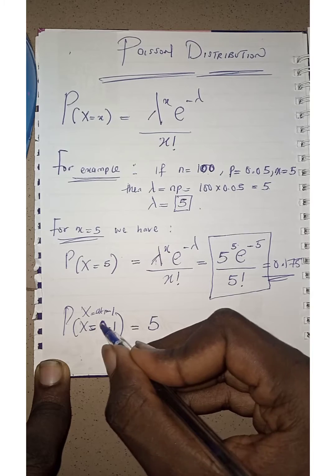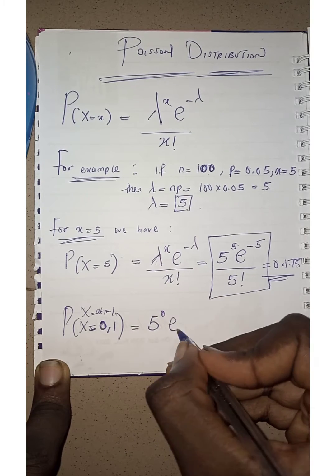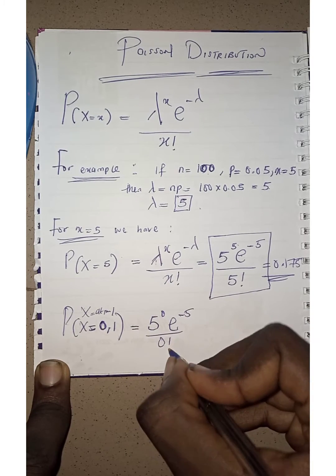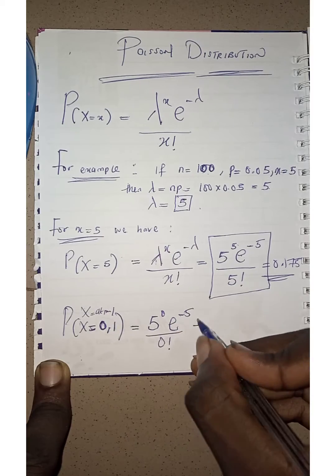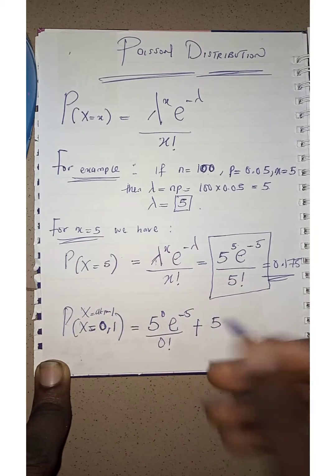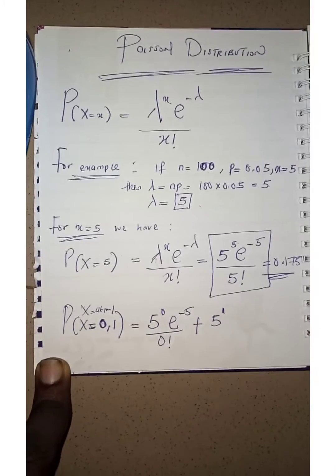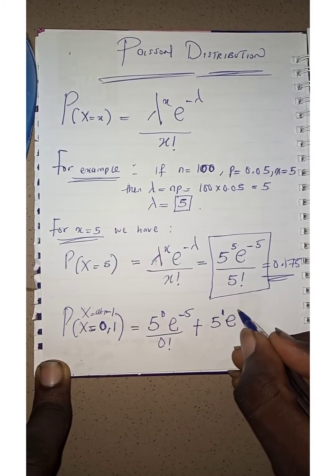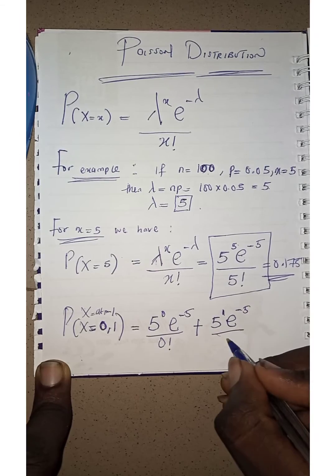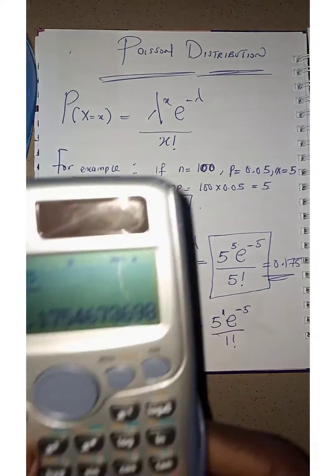But now I need to solve for when x is 0. So I'm putting for when x is 0, exponential is equal to minus 5, all over 0 factorial. So I'll solve for at most 1, I'll add it to it when x is 1 also. And that will be 5 raised to the power of 1, exponential is equal to minus 5, all over 1 factorial.